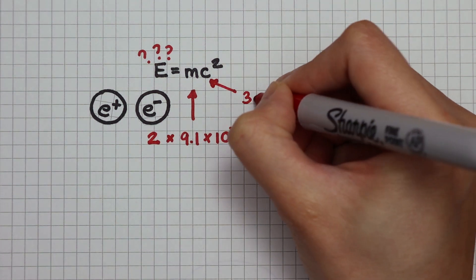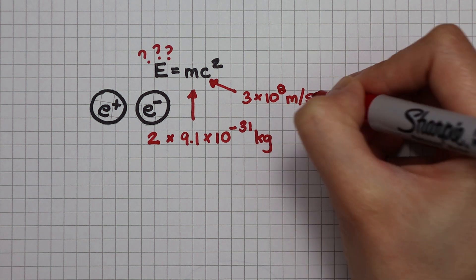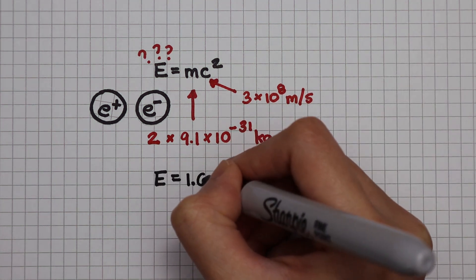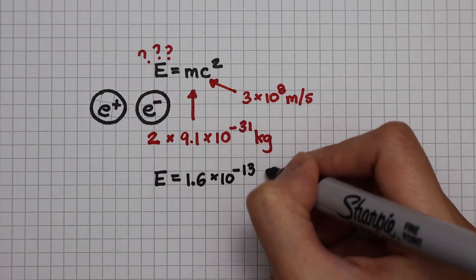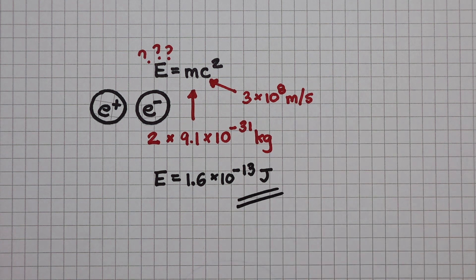Speed of light is 3 times 10 to the power of 8 meters per second. So this is the amount of energy a photon needs in order for pair production to happen. Take a guess which wave in the EM spectrum carries this much energy. Gamma radiation.